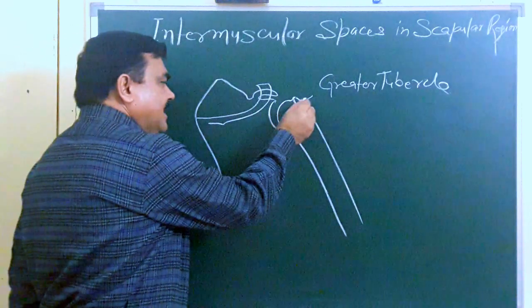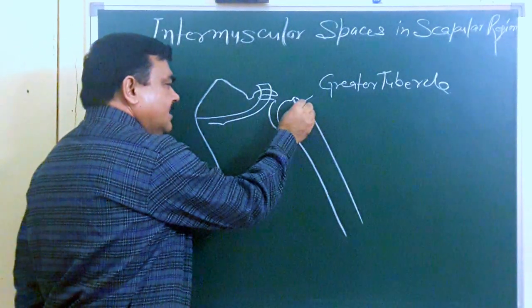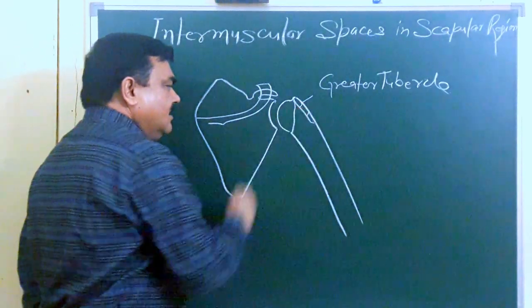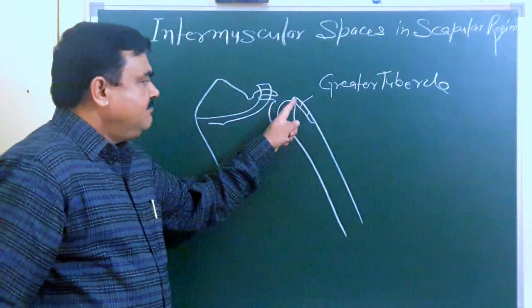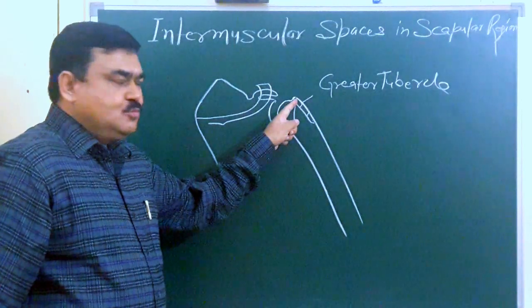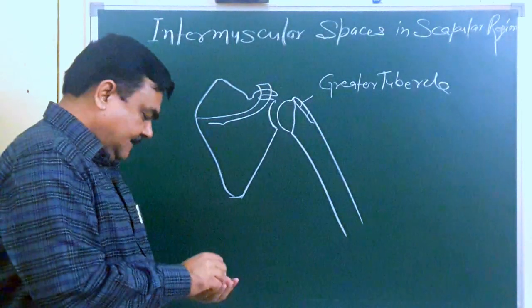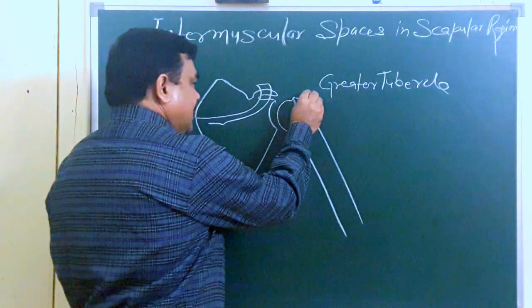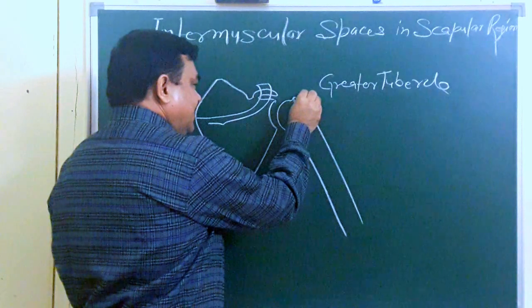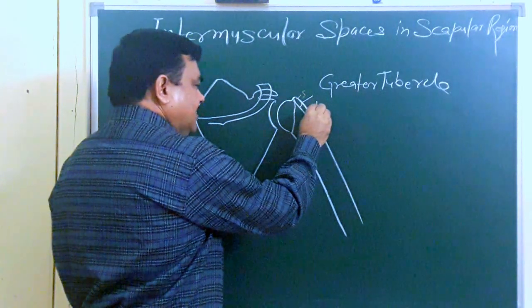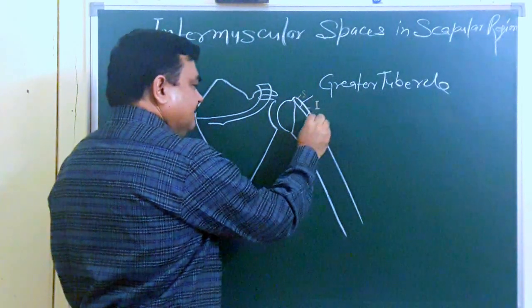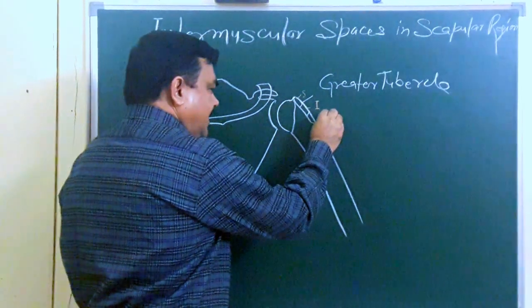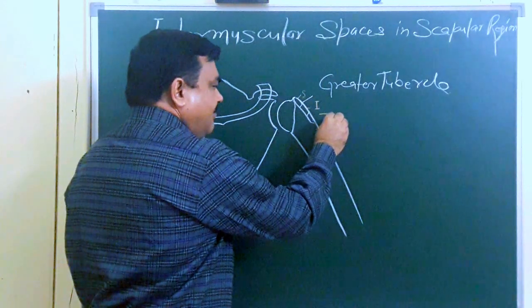Here are three impressions on the greater tubercle. This impression is for supraspinatus — here the supraspinatus muscle is attached. Here is infraspinatus, and here is teres minor.